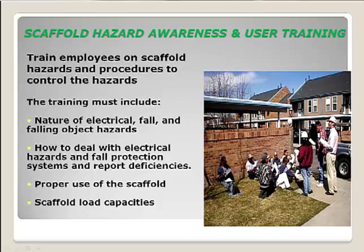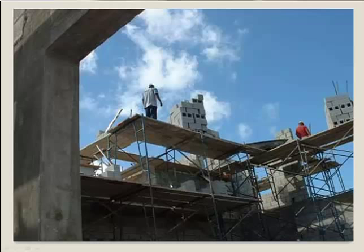We also need scaffold hazard awareness and user training. The competent person is in charge of erecting and inspecting the scaffold before each shift. Anyone using the scaffold must have hazard awareness and user training — covering the nature of electrical, fall, and falling object hazards, how to deal with these hazards, who to report deficiencies to, proper use of the scaffold, and scaffold capacities. A scene of overloading with no fall protection represents multiple violations — at least serious, and potentially willful if training was in place but controls were not implemented.